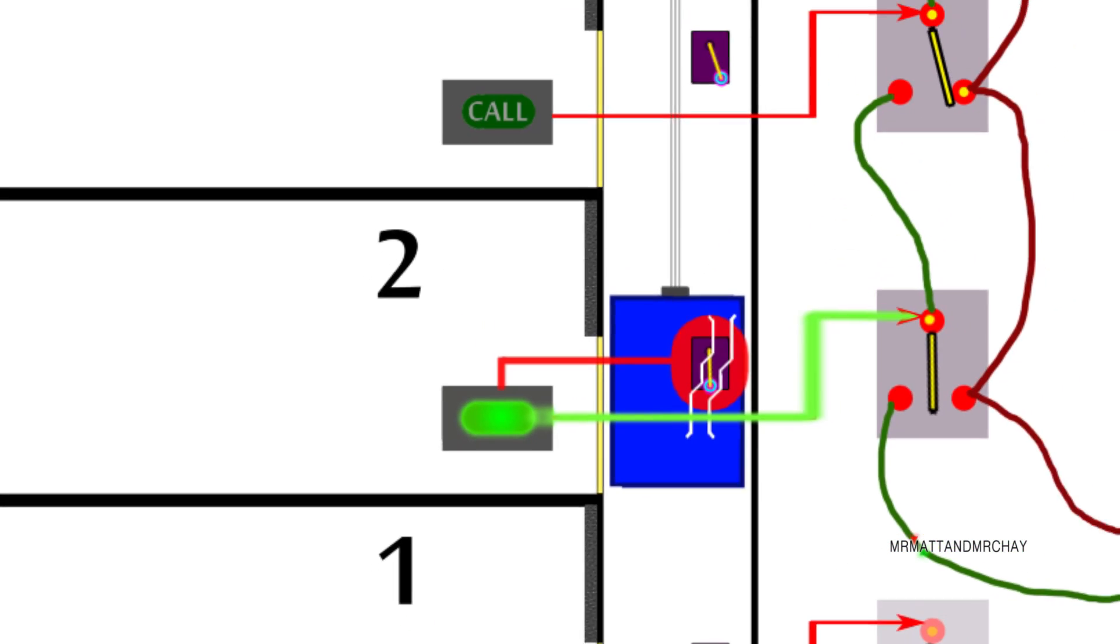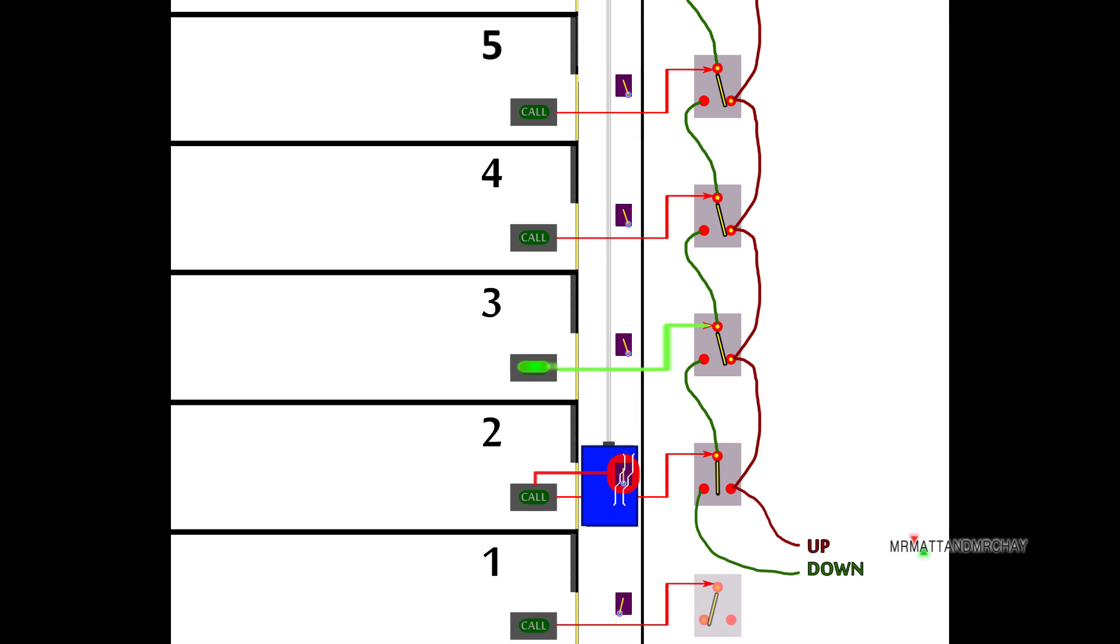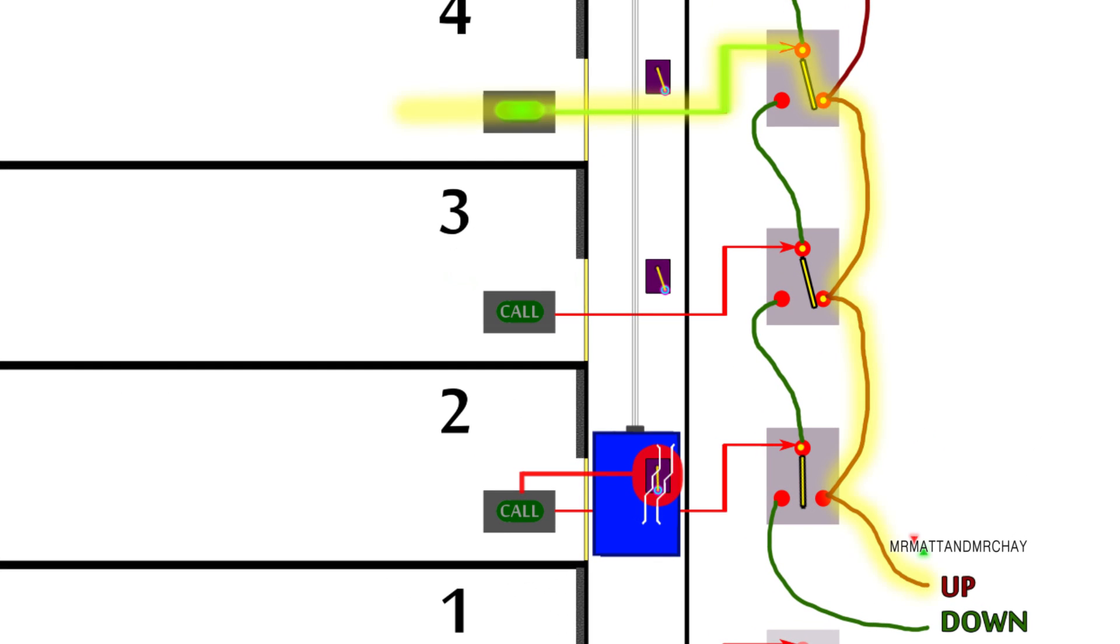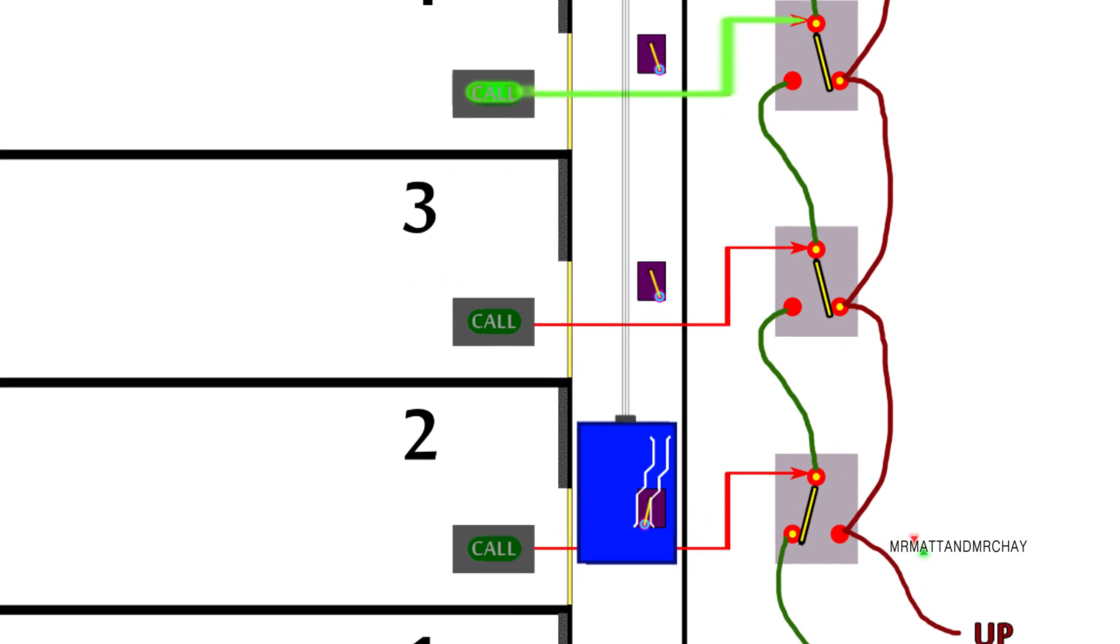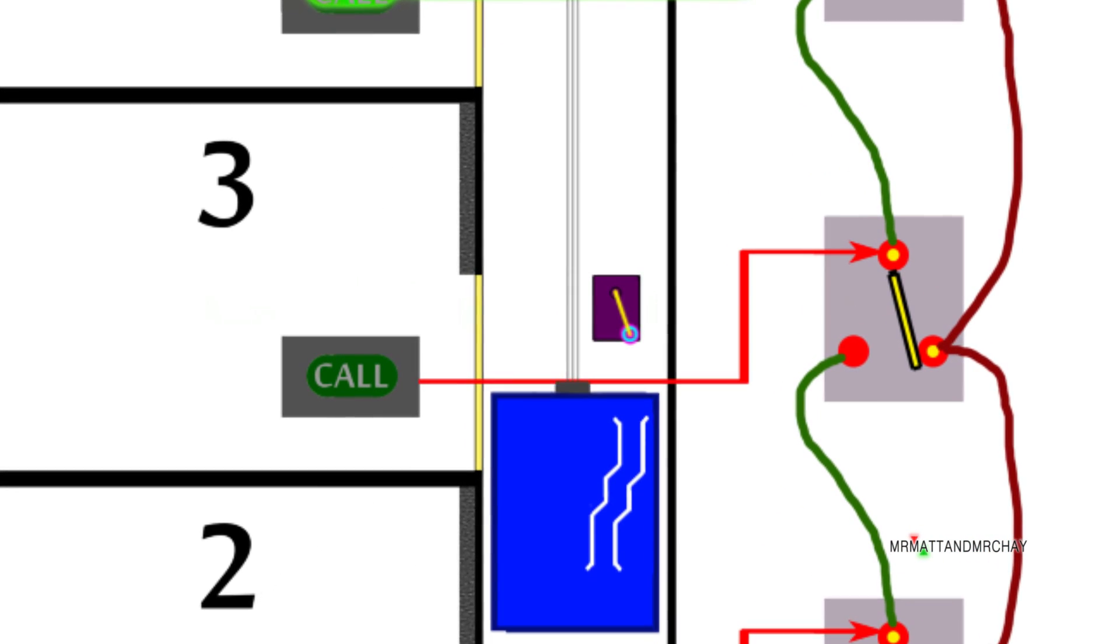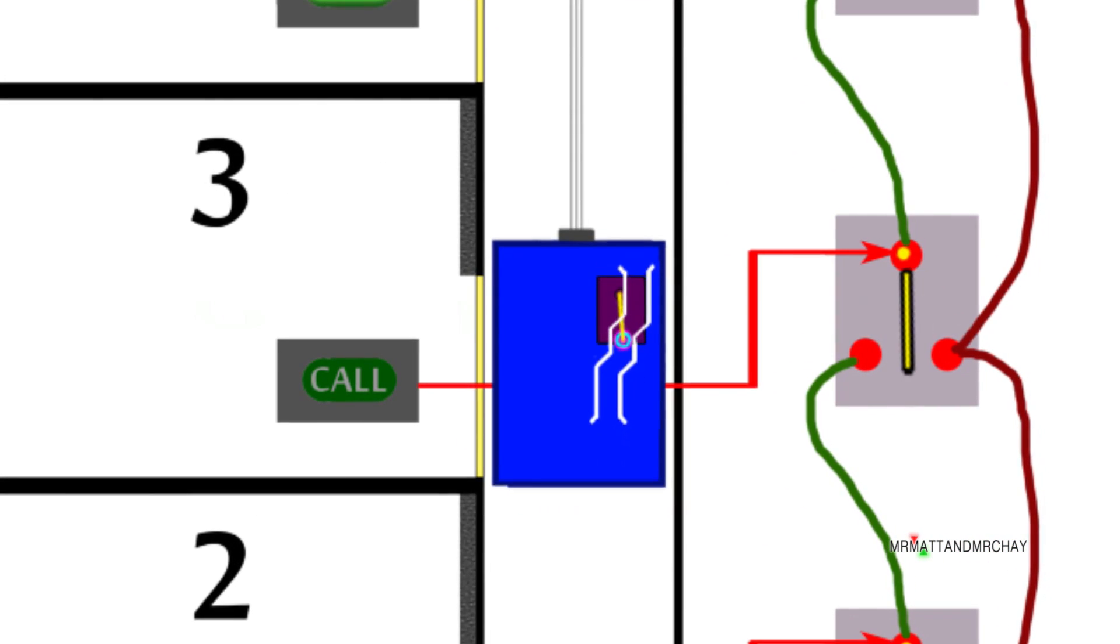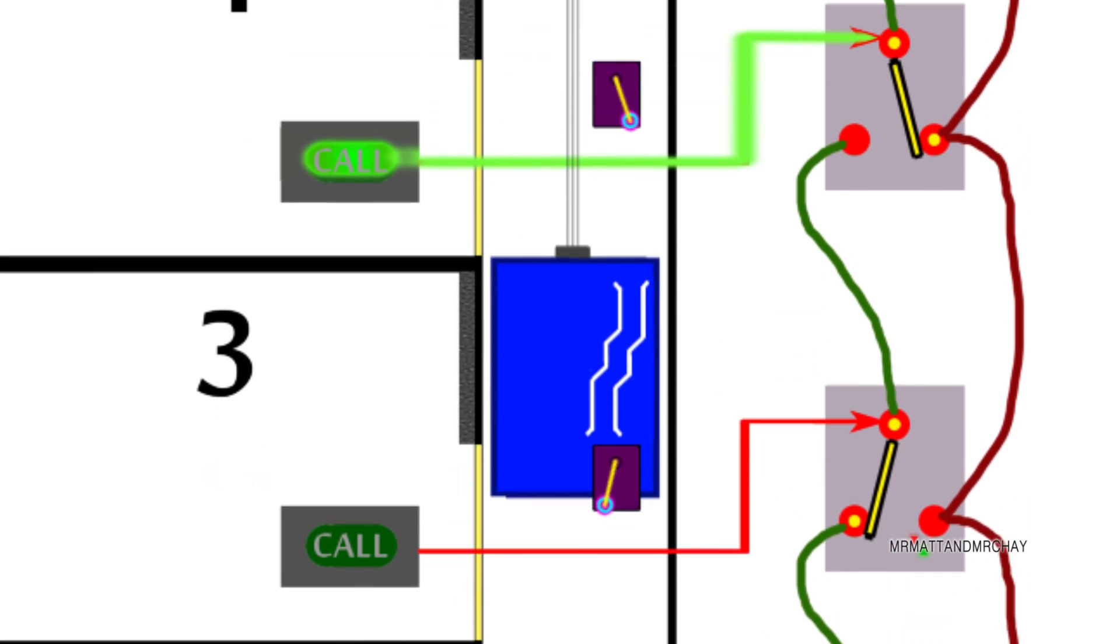All the calls above the lift would send the car upwards. That's logical, right? But before microprocessors and software-controlled lifts, everything had to be represented mechanically. As the lift passes a floor, the floor switch is reversed, until the switch with the active call is found, which stops the lift.